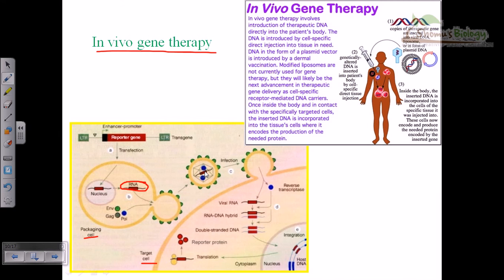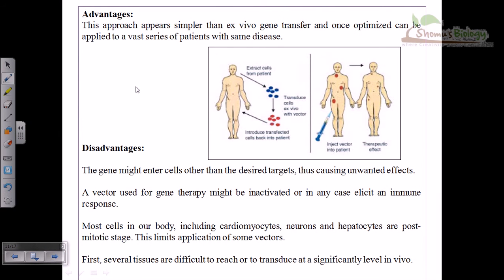The virus can replace the target cell's old faulty gene with the new gene of interest. The advantages of in vivo therapy are that this approach is simpler than ex vivo gene transfer and often does not need to be monitored on a regular basis outside the body — we let the body take its own course. Once optimized, this therapy can be applied to a vast series of patients with the same type of disease, so it can be standardized and repeated for the same disease across many patients.